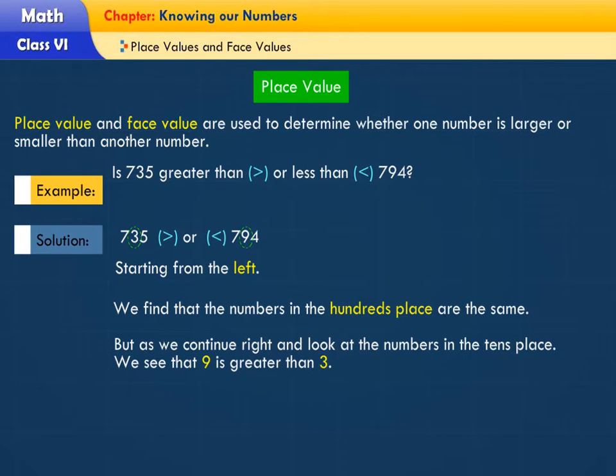we see that 9 is greater than 3. Therefore, we conclude that 735 is less than 794.